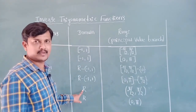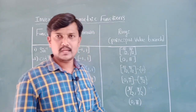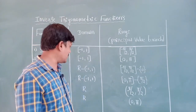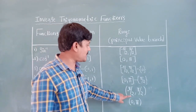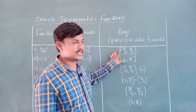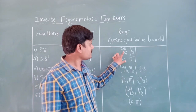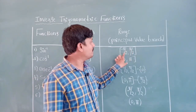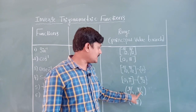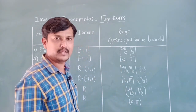Next, tan inverse: domain is R, meaning real numbers — all natural numbers, integers, irrational and rational numbers belong to real numbers, except complex numbers. Range of tan inverse is minus pi by two to pi by two — open interval. Closed interval means both starting and terminal points are included; open interval means starting and terminal points are not included, only in-between values.